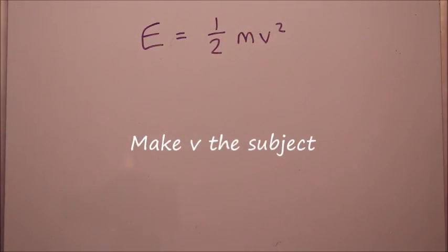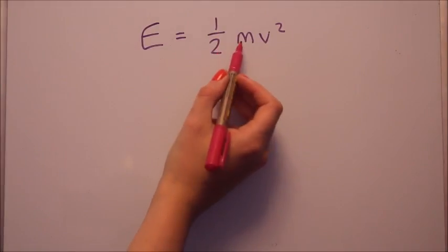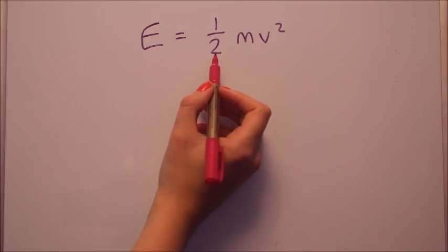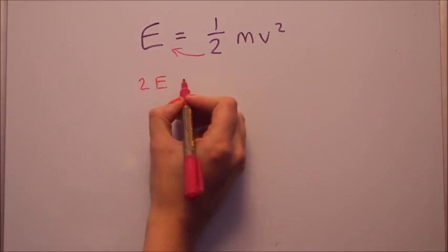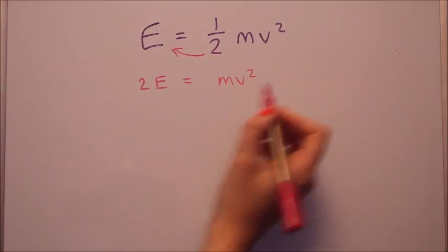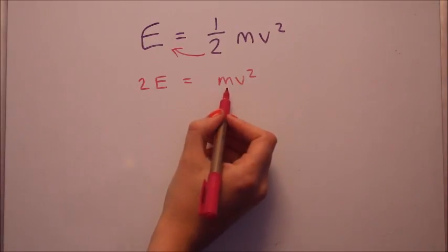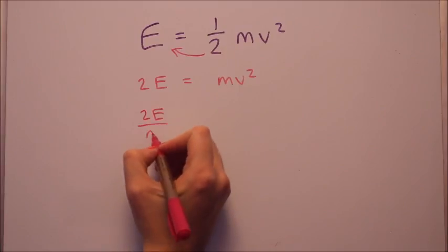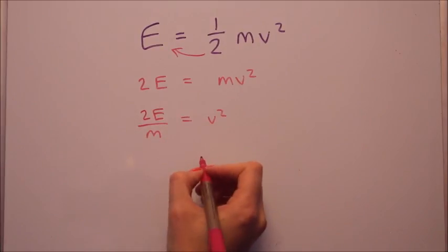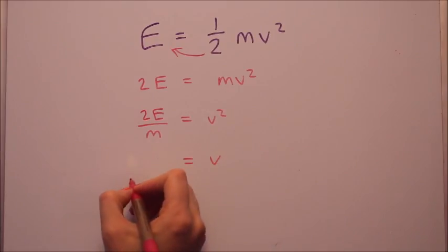Okay, have you had a go? I want to get rid of the half first of all, I don't like fractions, so if this one's got, you're dividing by two effectively, so the opposite is to multiply by two, so we're going to bring the two up, so multiply by two to get 2E, you're left with MV squared. Now I want to get rid of the M, so because we're multiplying we're going to divide by it. Left with V squared, and to get V on its own, I do the opposite of squaring, which is square rooting.